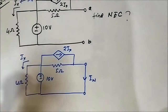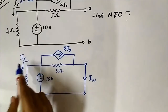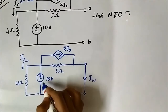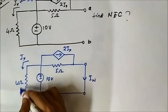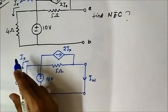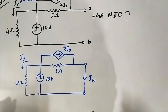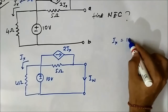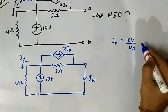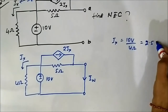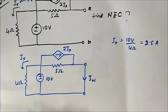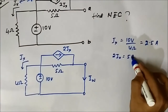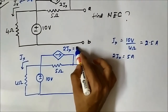The important thing here is to determine IX, because the current-dependent current source depends on it. The 10 volt source is connected across the 4 ohm resistor through which IX is flowing. So IX equals 10 volts divided by 4 ohms, which is 2.5 ampere. Therefore 2IX equals 5 ampere.